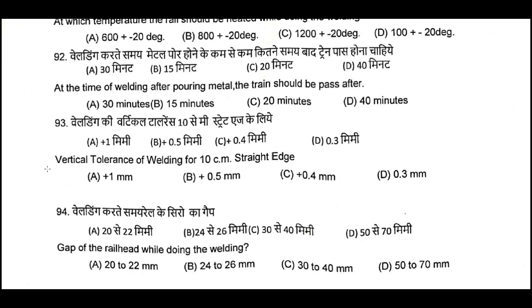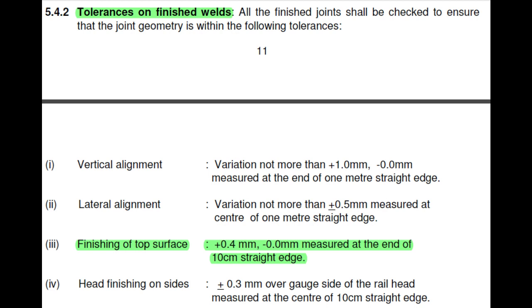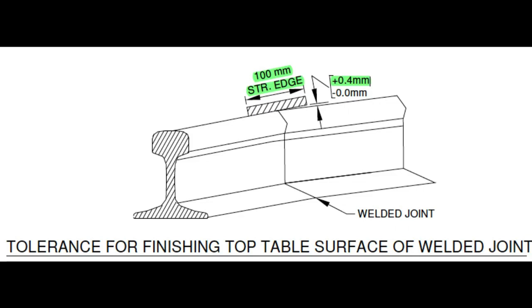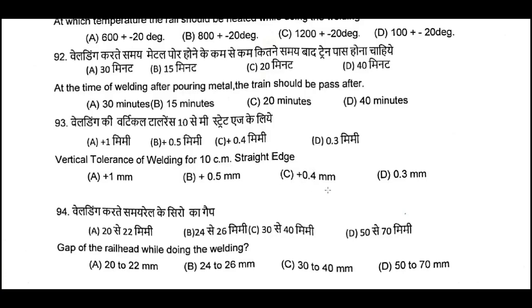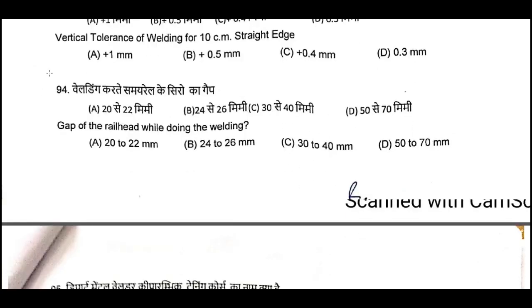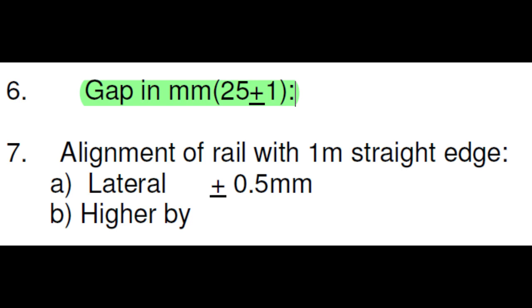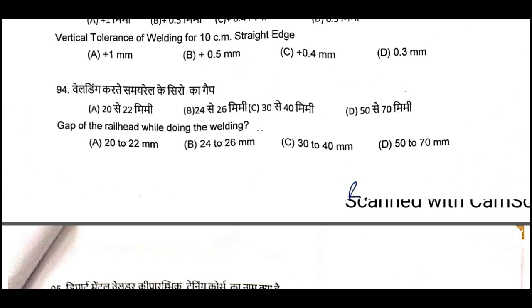Question Number 93: Vertical tolerance of welding for 10 cm straight edges. C is the correct answer: 0.04 mm. Question Number 94: Gap of the rail head while doing the welding. For SKV welding, that is 25 mm gap — the variation is 24 to 26 mm. Question Number 94, B is the correct answer: 24 to 26 mm.